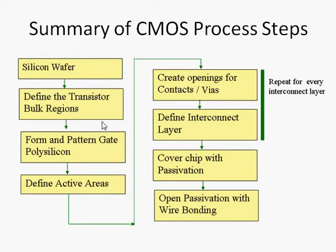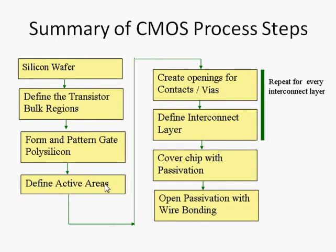Next, we defined the polysilicon gate on the transistors — a two-step process: first we deposited the thin gate oxide layer, and then we deposited the polysilicon. After which, we defined the active areas — both the N-plus diffusion areas and the P-plus diffusion areas — which form the source and drain regions of the transistors.